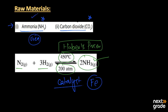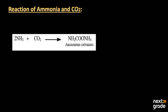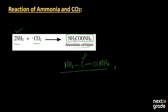Now let's look at the reaction of ammonia and carbon dioxide, which is the first step in urea production — the conversion of ammonia to ammonium carbamate. Two moles of ammonia react with one mole of carbon dioxide to produce an intermediate compound known as ammonium carbamate. Its formula can be written as NH₂COONH₄.